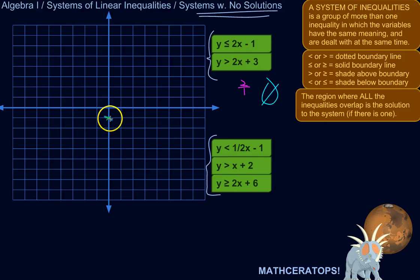Y-intercept is negative one. Slope is one over two. So I go up one and over two. And this is less than, not less than or equal to. So that needs to be a dotted line. And it's less than, so we're going to shade below.